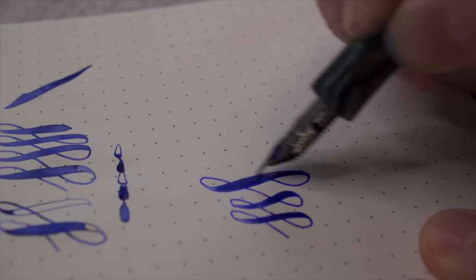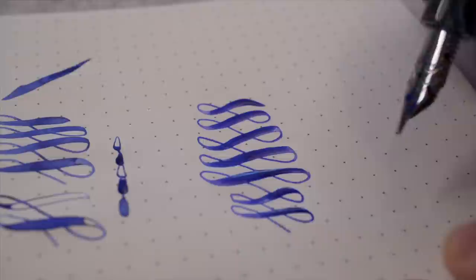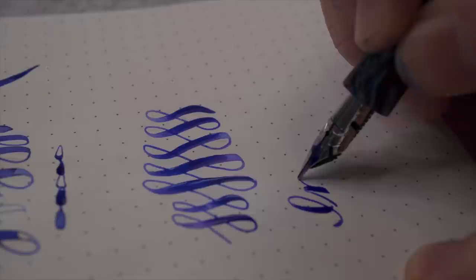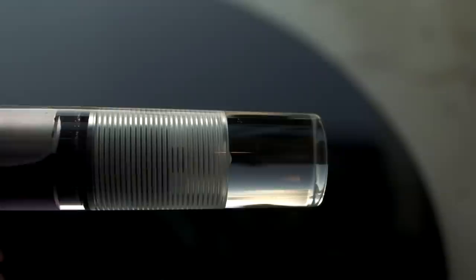As you can see here, I am not applying so much pressure that it's wrinkling the paper. It's a very light pressure and very nice flex. And if it ends up railroading a little bit, you just wait a second and the ebonite feed will catch up with you.